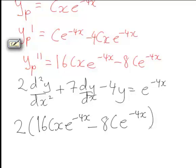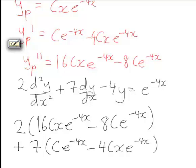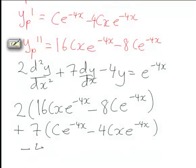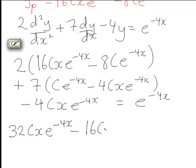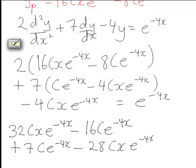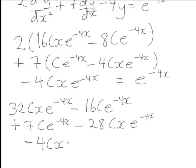Substituting into the DE: the second derivative term gives 16cx e to the negative 4x minus 8c e to the negative 4x, plus 7 times the first derivative which is 7 times (c e to the negative 4x minus 4cx e to the negative 4x), minus 4 times yp which is minus 4cx e to the negative 4x. This equals e to the negative 4x on the right hand side.